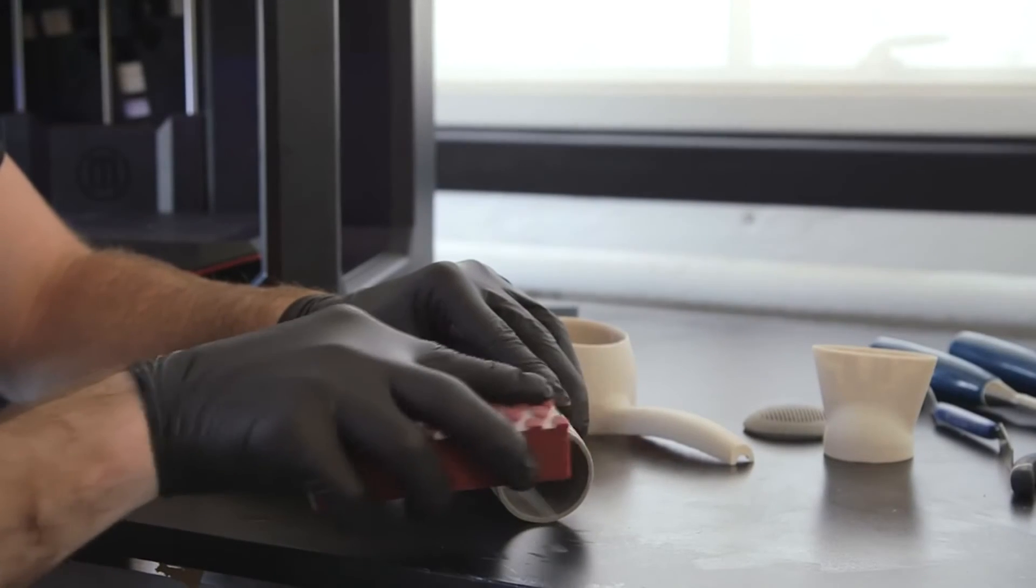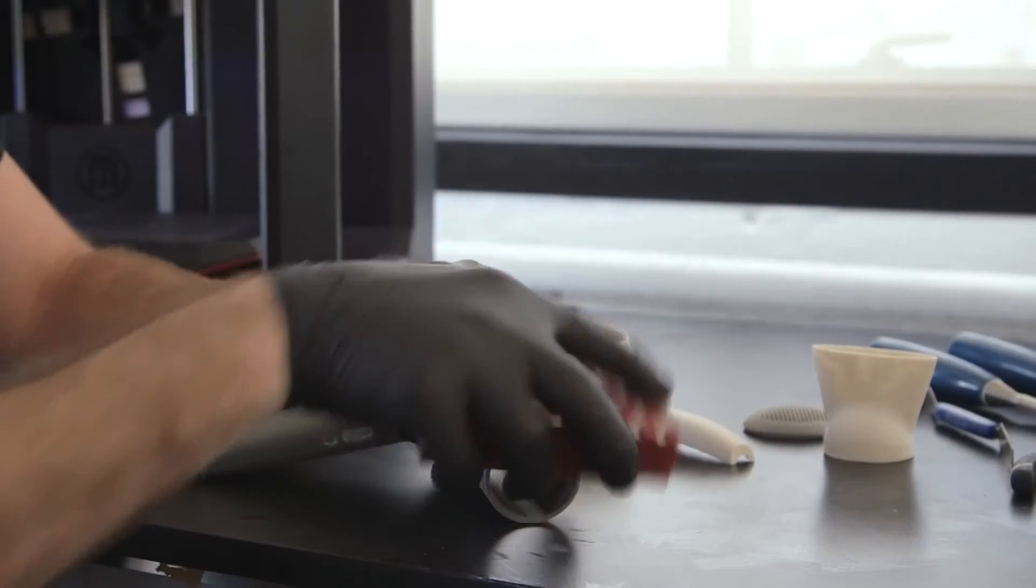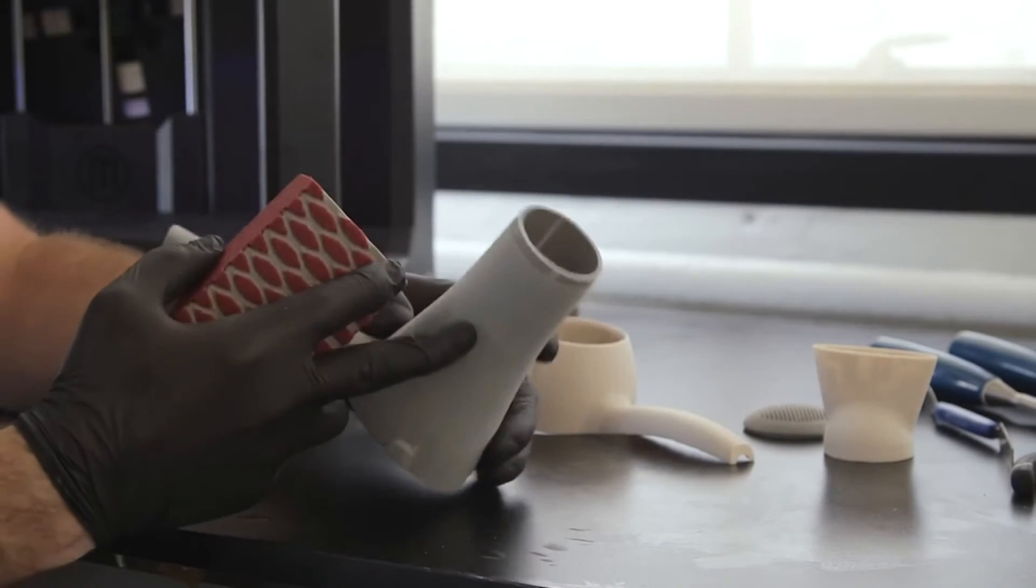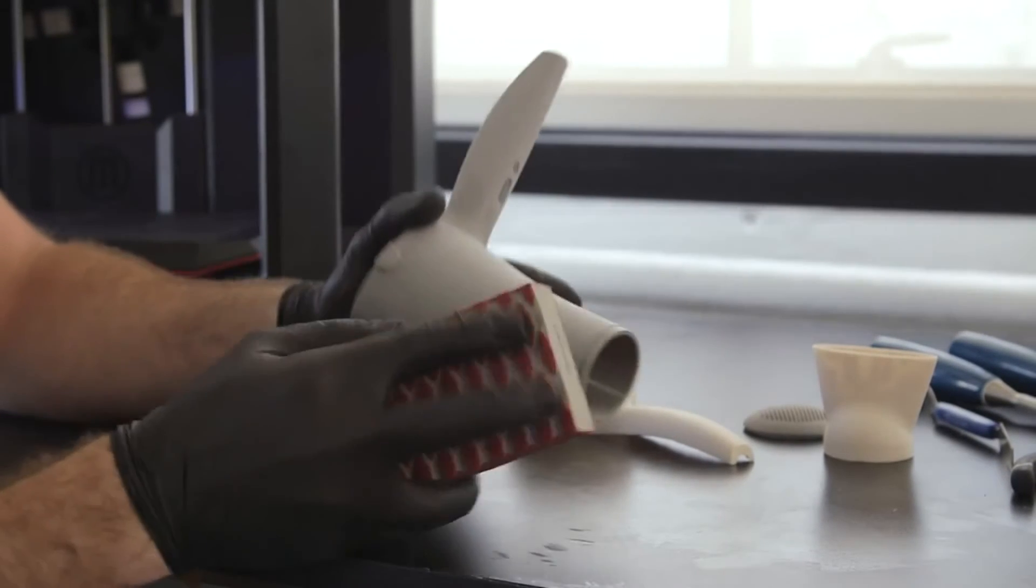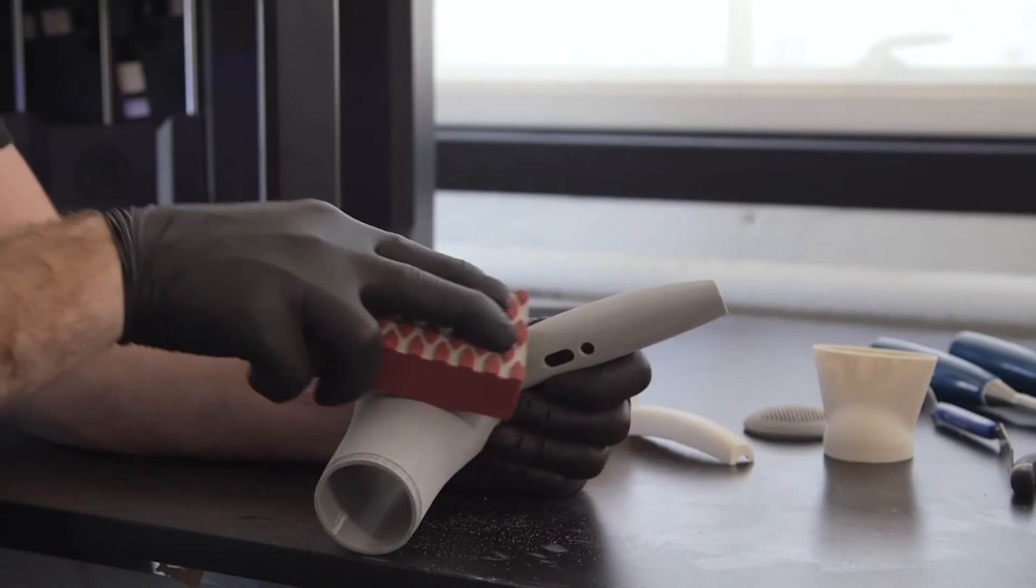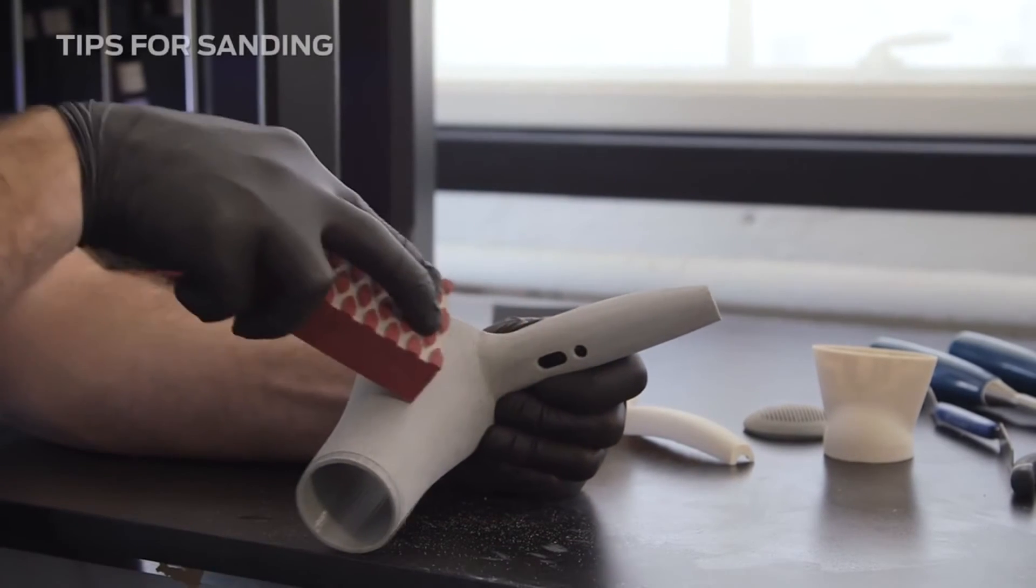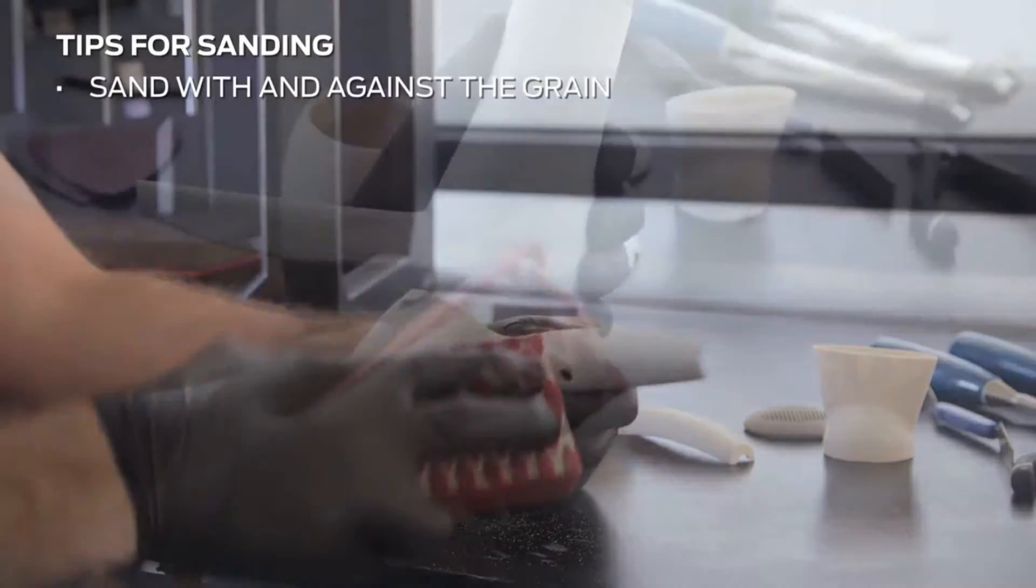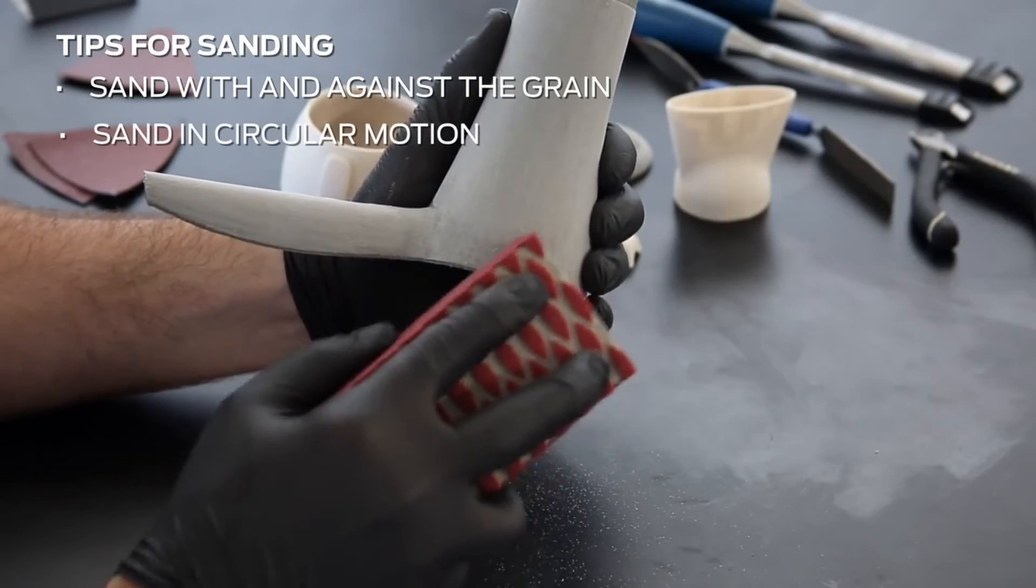Sanding curved surfaces and small features can be a challenge. Use smaller strips of sandpaper or electric sanders with different attachments to reduce sanding time. In tough areas, sand both with and against the grain, as well as in circular patterns.